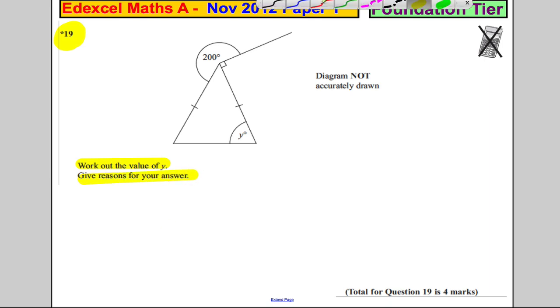Firstly, this shape here is a triangle and this line and this line are telling us that these two sides are the same in the triangle. So it's an isosceles triangle.